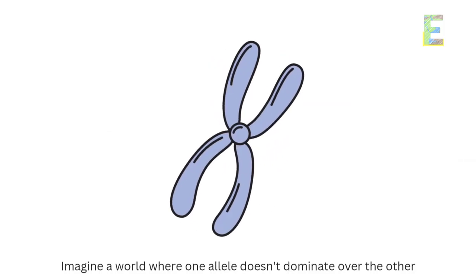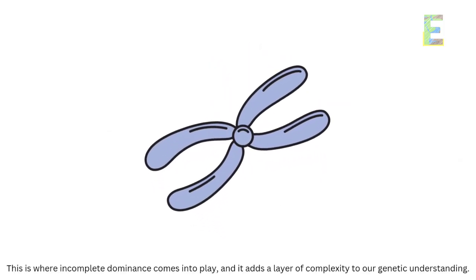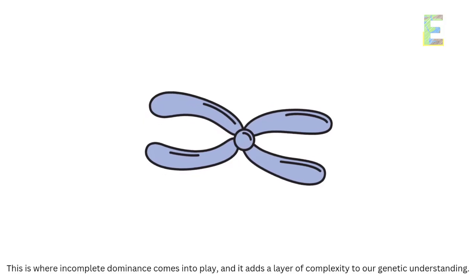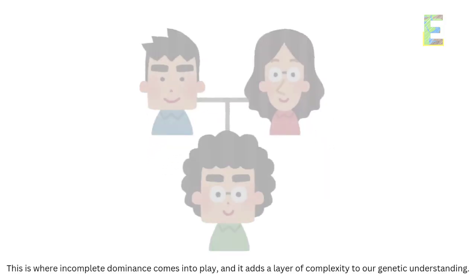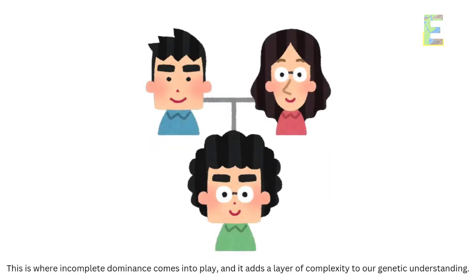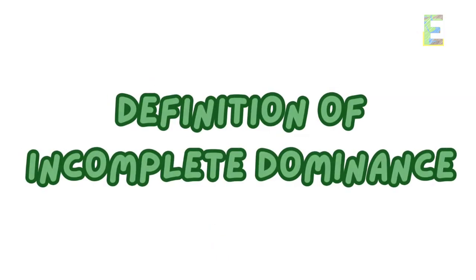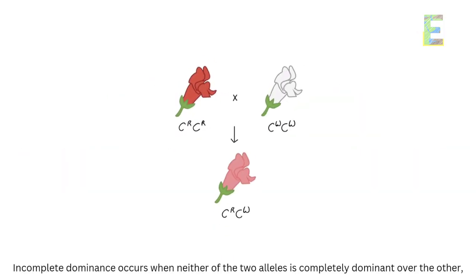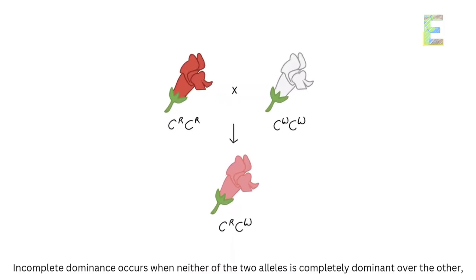This is where incomplete dominance comes into play, and it adds a layer of complexity to our genetic understanding. Incomplete dominance occurs when neither of the two alleles is completely dominant over the other, resulting in an intermediate or blended phenotype.